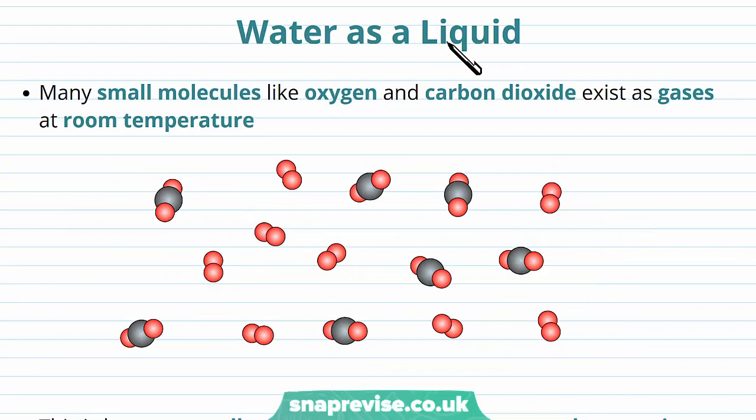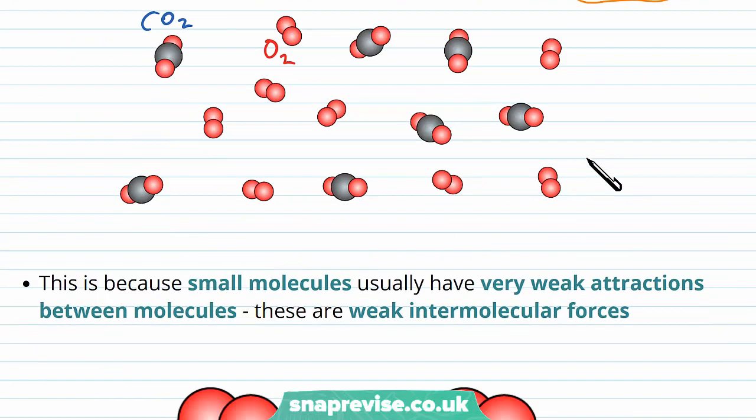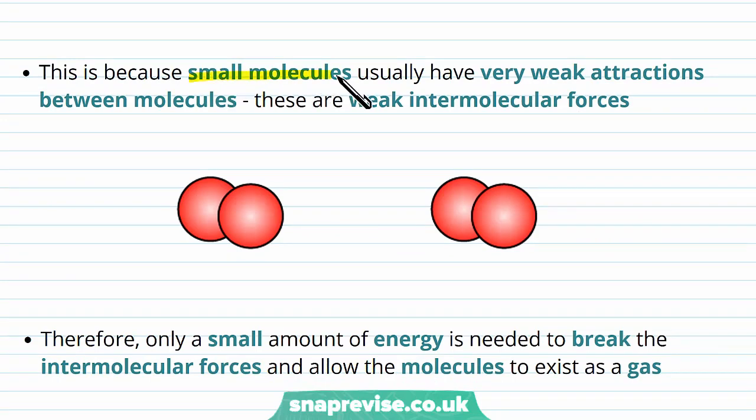Water as a liquid has specific properties. A lot of smaller molecules like oxygen, which are only two oxygen atoms together, or molecules of carbon dioxide written as CO2, are small molecules and they tend to exist as gases at room temperature already. If these molecules already exist as gases, they've already reached this high kinetic energy state. The reason for this is because small molecules like oxygen and carbon dioxide only have very weak attractions between their molecules, these are weak intermolecular forces.